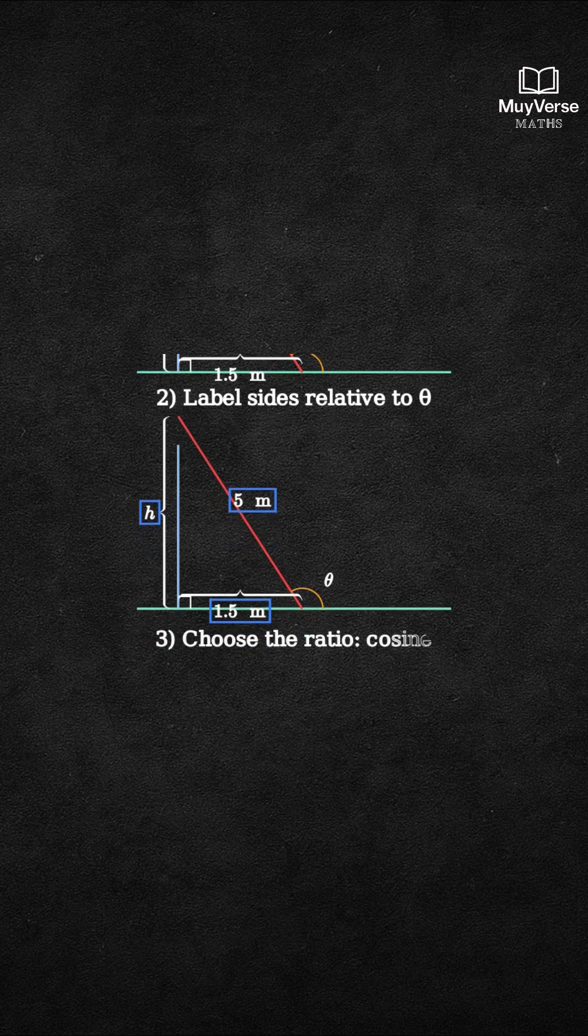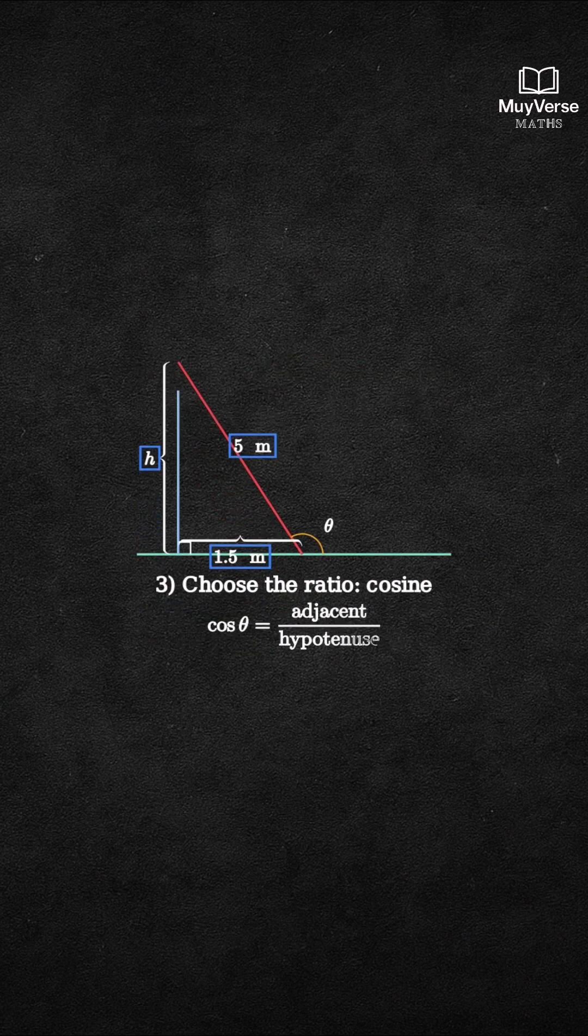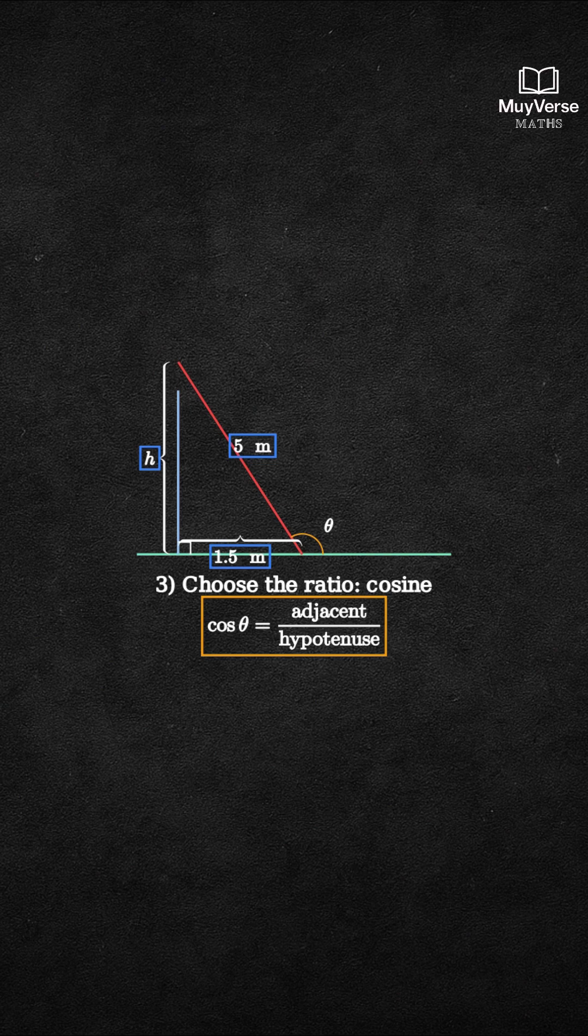Step 3. Choose the cosine ratio because we know adjacent and hypotenuse. Cosine theta equals adjacent over hypotenuse.